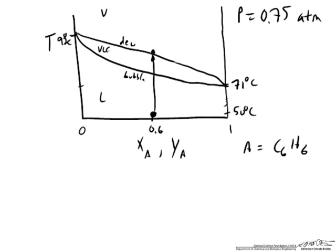So let's look at how this looks on a TXY diagram. We see that when we draw the phase envelope, that we start with a 92 degrees C temperature, and this is the saturation temperature for component B, which is water, whereas 71 degrees C on the right hand side, where we have pure component A, which is benzene, is T sat for component A.